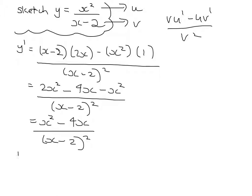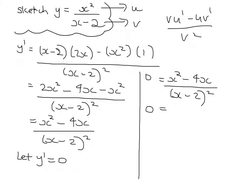And we need to find some stationary points. So 0 equals x squared minus 4x over x minus 2 all squared. If we times both sides by the denominator, we get 0 equals x squared minus 4x. Factorize, that's x minus 4 with x outside. Therefore, two stationary points, x equals 0 or x equals 4.